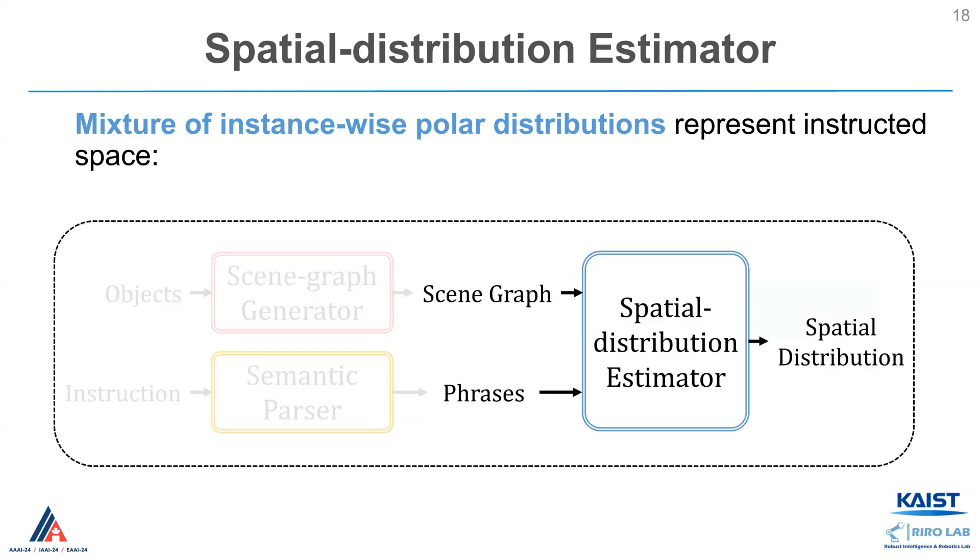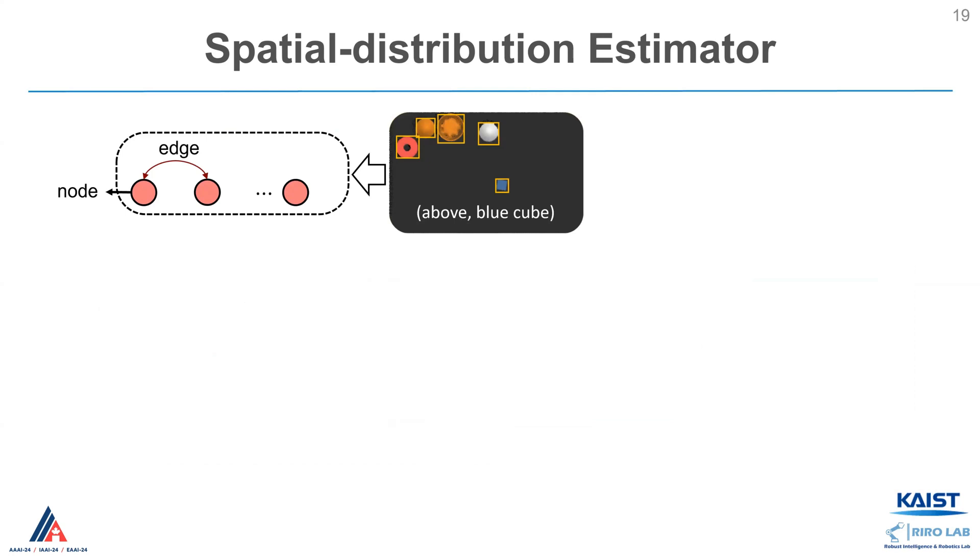Returning to the overall framework, now, the spatial distribution estimator provides a mixture of polar distributions. Let me begin to explain the architecture of the estimator in detail.